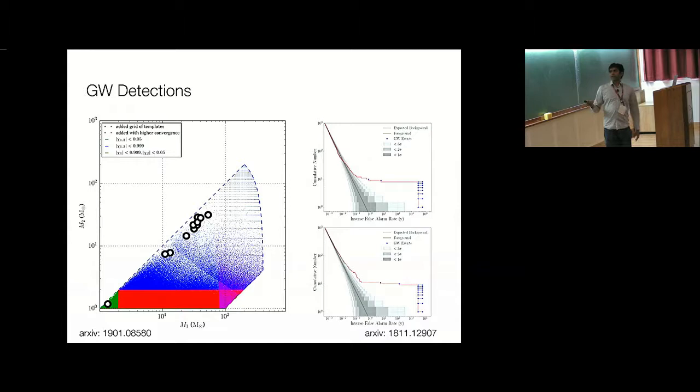So every search you make involves a bunch of decisions. The first decision we made is: if you look at the way the templates are located and spaced on this plane, it's not uniform. The per unit mass, the density of templates is much, much higher at lower masses than it is at higher masses. This is because of the many radians of phase that is accumulated here.